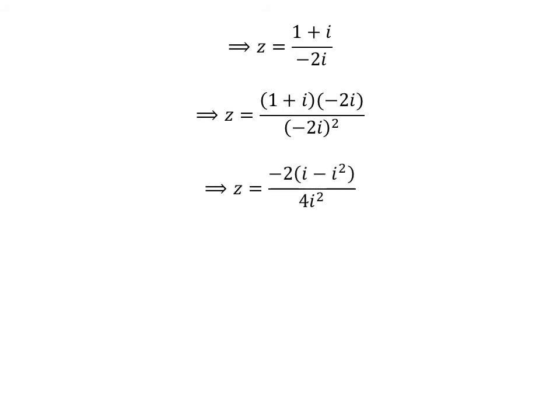Distributing the multiplication in the numerator gives us z is equal to minus 2 times i minus square of i upon 4 times square of i. As square of imaginary unit i is minus 1, z is equal to minus 2 times 1 plus i upon minus 4.